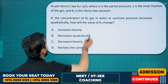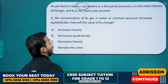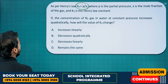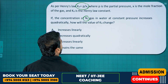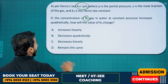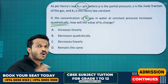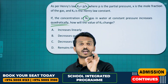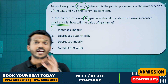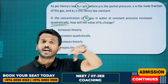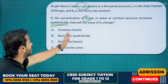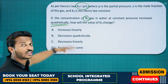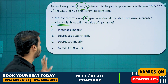As per Henry's law, KH = P / mole fraction. The KH value for a particular gas is fixed — KH of hydrogen and KH of nitrogen are fixed. Even if concentration of N₂ gas in water changes at constant pressure, the KH value does not change. It remains the same for a particular gas.